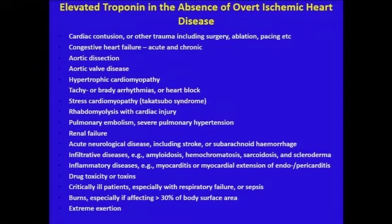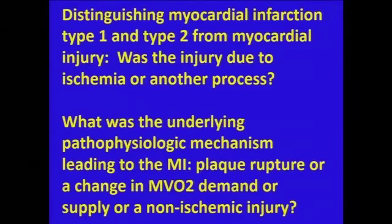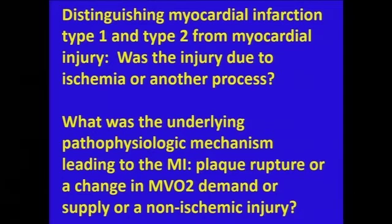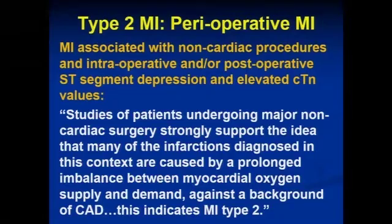There is a long list of things that raise troponin that are not due to ischemic heart disease — things like renal failure, drug toxicity, and so forth, taken from the 2012 document. Distinguishing Type 1 from Type 2 requires determining whether the injury was due to ischemia or another process, and estimating in the clinical situation what the underlying pathophysiologic mechanism was — whether it was plaque rupture or a change in myocardial oxygen demand or supply.